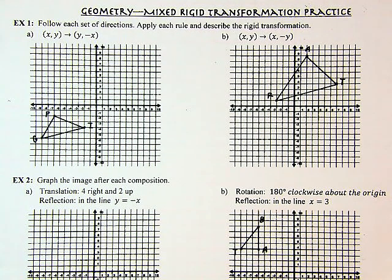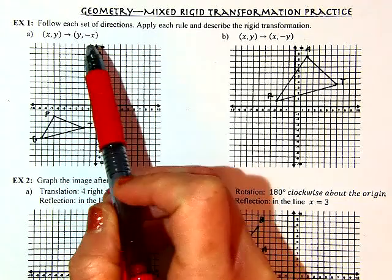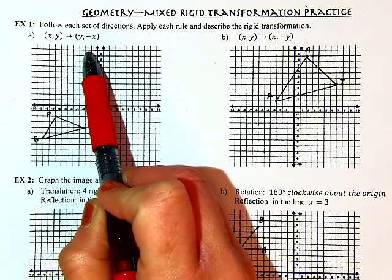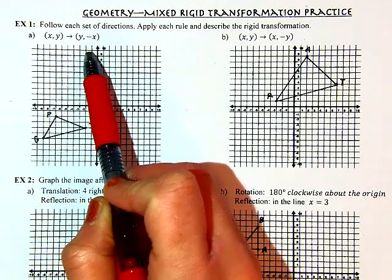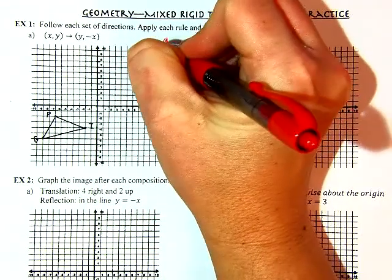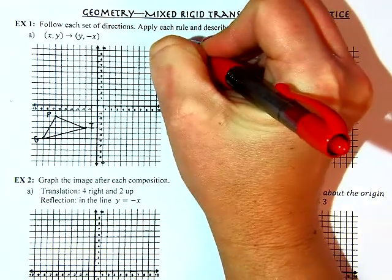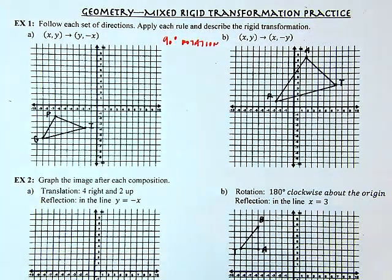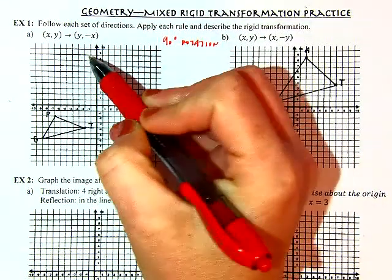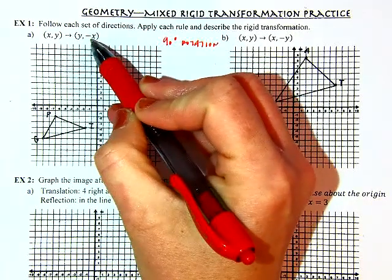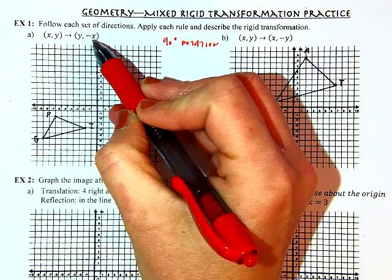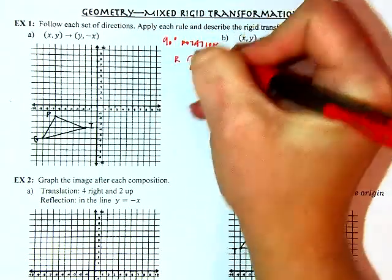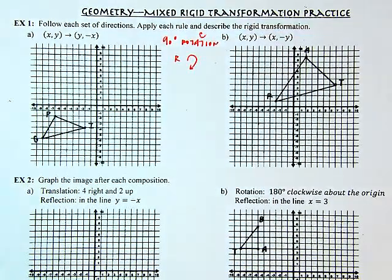Looking at my rule, I see that X and Y have switched position, and only one of them is going to the opposite sign. So I can identify this rule as a 90-degree rotation. And is it going with the clock or against it? The negative — the opposite sign — is going to the one on the right, which tells me it's going to veer to the right, which means it's a clockwise rotation.